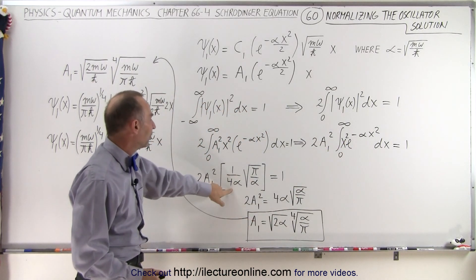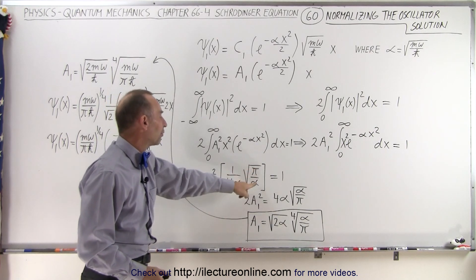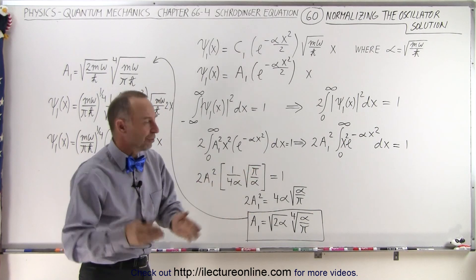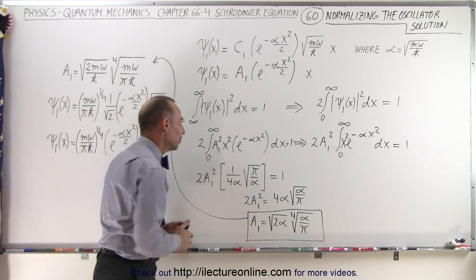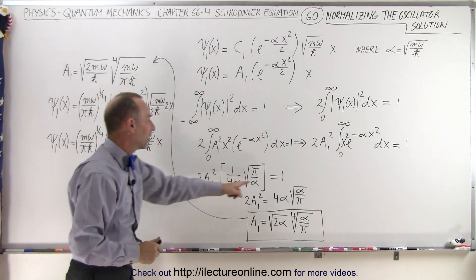this becomes equal to 1 over 4 alpha times the square root of pi over alpha. Remember that list of integrals that we gave you on the previous video? That comes in very handy right now. So we set that equal to 1.